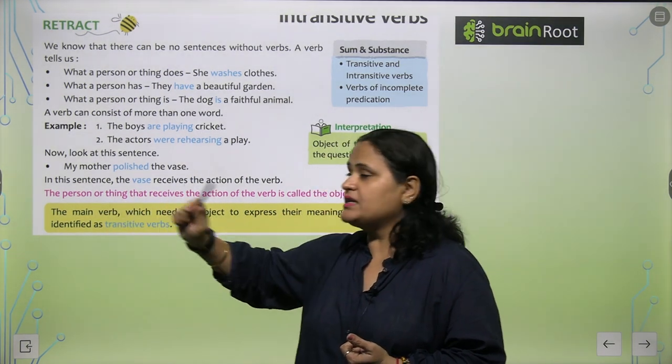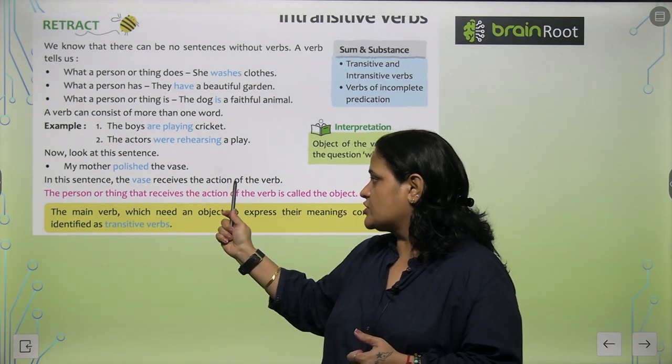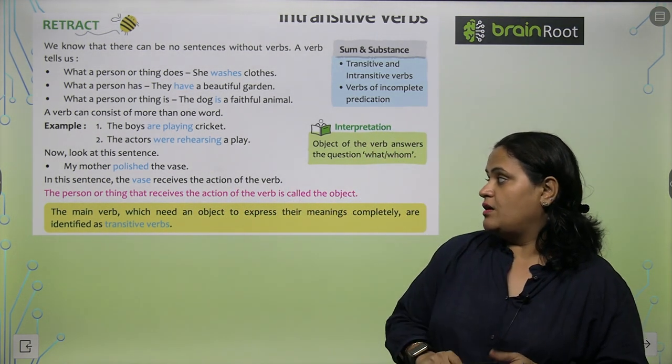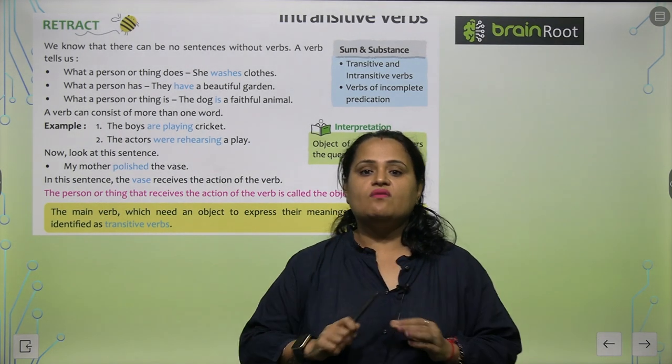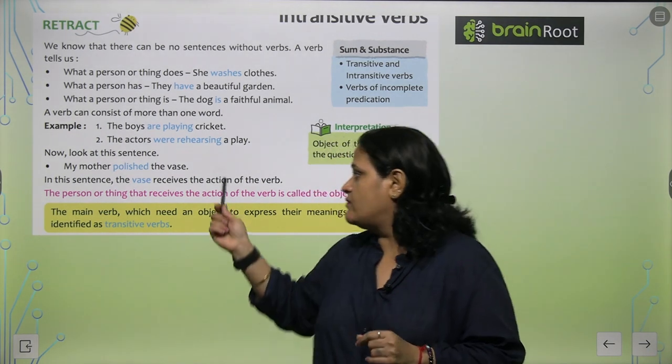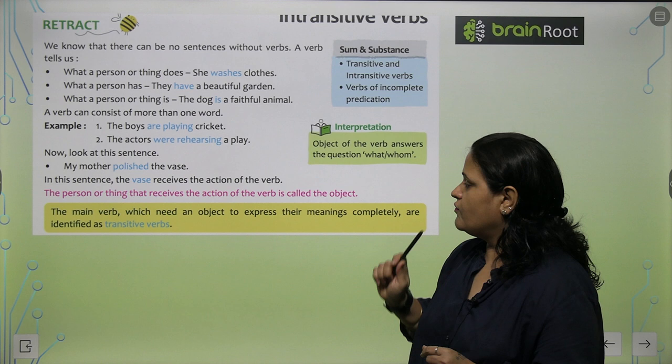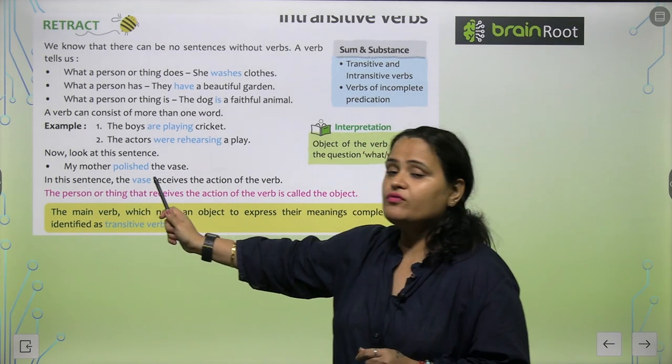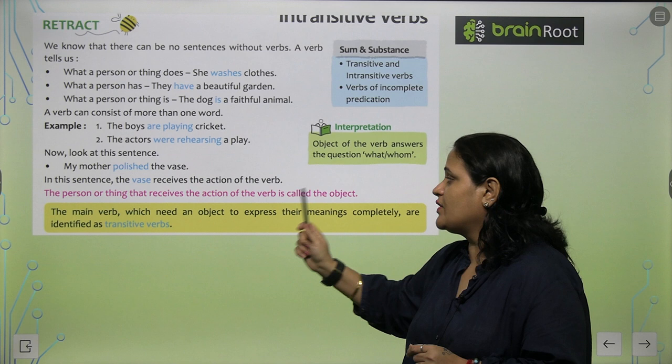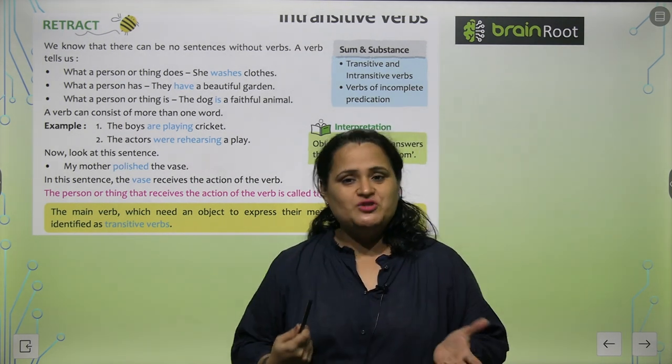So now look at this sentence: My mother polished the vase. Ab yaha par ye vase kya hai in this sentence? The vase receives the action of the verb. Mother polished kisko? Vase ko. The person or thing that receives the action of the verb is called the object.